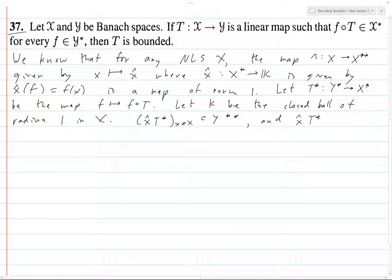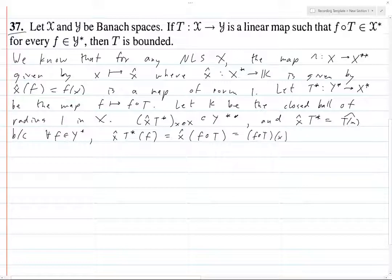And x̂T* equals T∘x̂. And why is this? Because for all f in Y*, x̂ of T* of f, what is this? This is just x̂ of f∘T, and this is just f∘T evaluated at x, and this is f of T evaluated at x, and this is just the evaluation T of x̂ of f.